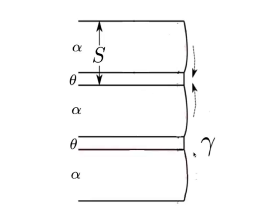Here is a simplification of pearlite growth: we have layers of cementite and ferrite with a common transformation front with the gamma. The average composition of the pearlite is more or less the same as that of the alloy, and therefore you do not get any long-range change in the composition of the austenite.